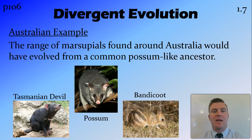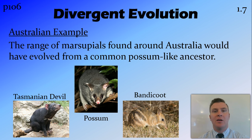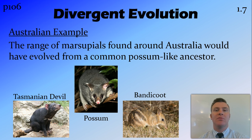An Australian example of divergent evolution would be all the different marsupials found around Australia. They would have had one common possum-like ancestor, and now we have a range of marsupials ranging from the carnivorous Tasmanian devil to the herbivorous bandicoot and the modern possum, which probably still fulfils the niche that the common ancestor filled.